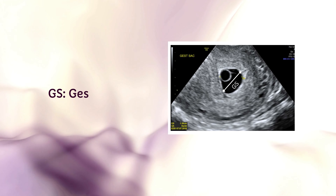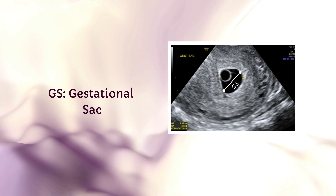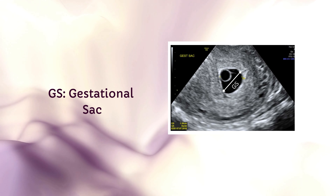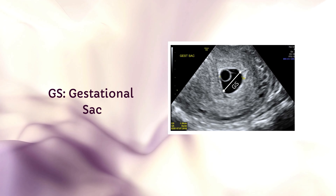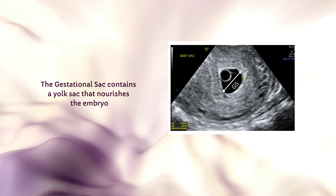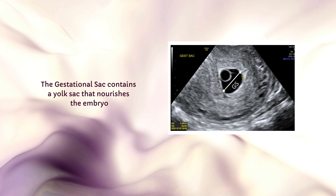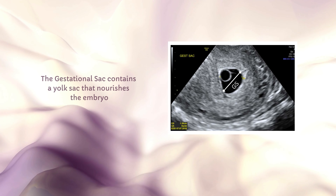First up, GS means gestational sac. The first visible structure in early pregnancy ultrasounds is the gestational sac, often seen as a small black bubble. It contains and protects your growing embryo.